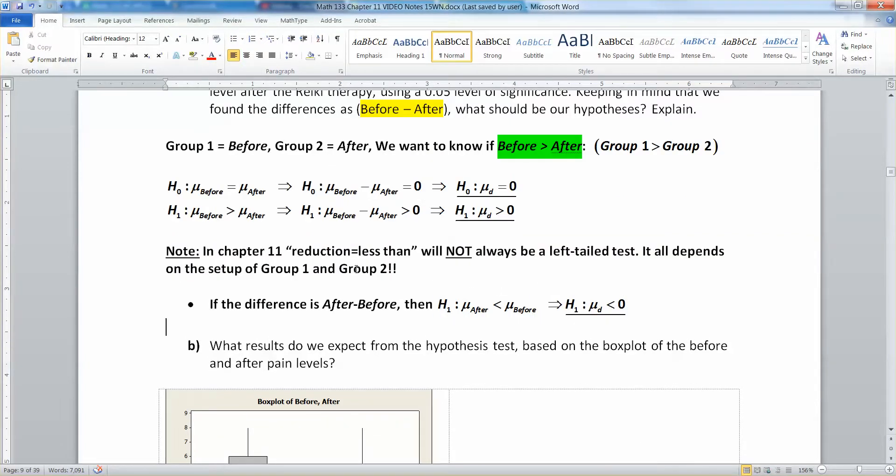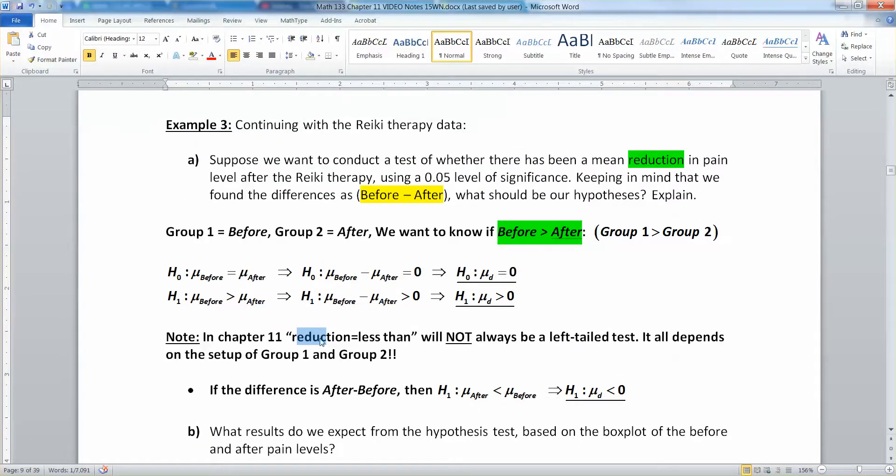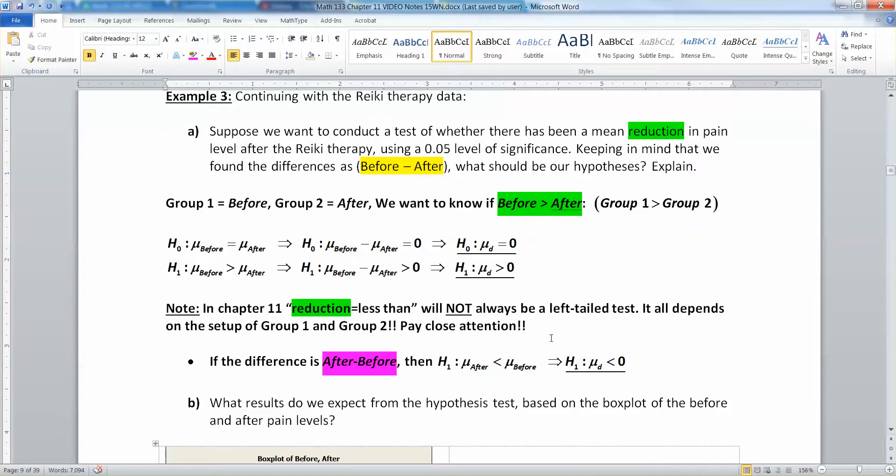It's a bit strange because reduction normally makes you think of less than, but that's not the case in Chapter 11. In Chapter 11, reduction doesn't always mean left-tailed like it did in Chapter 10. Sometimes less than or reduction means greater than, sometimes it means less than, and it all depends on how you set up group 1 and group 2. So pay close attention to the write-up, the words used, the groups established, and what direction we're taking.